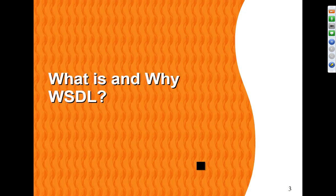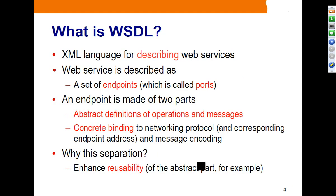What is WSDL and why use it? WSDL is an XML language for describing web services. It is a contract between the service provider and the service client. Once a client has access to the WSDL, that is the only thing required for the client to know what services are available and how to invoke those services. In WSDL, a web service is described as a set of endpoints, sometimes called ports.